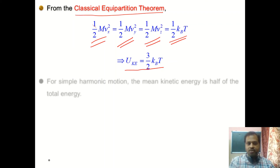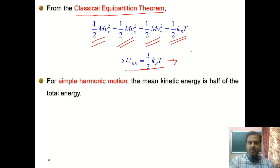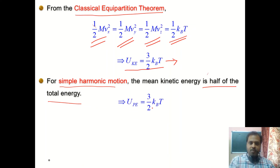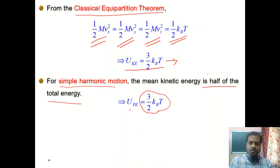We are assuming simple harmonic motion, or the harmonic approximation. In that case, the mean kinetic energy is always half of the total energy — for simple harmonic motion, the average kinetic energy equals half the total energy. Therefore the average potential energy is also three-halves kT. So three-halves kT is the average kinetic energy for a single atom and three-halves kT is the average potential energy for a single atom inside the solid.